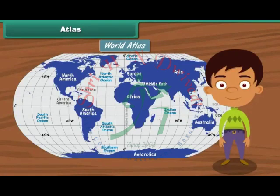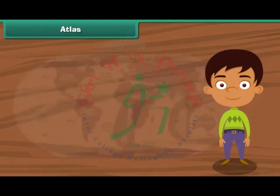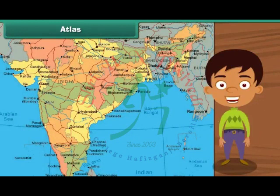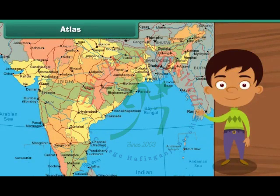An atlas is a collection of maps and charts. The maps in an atlas give the geographical information about different parts of the world. The charts in an atlas contain details of specific locations such as population, sea levels, crops produced, etc.